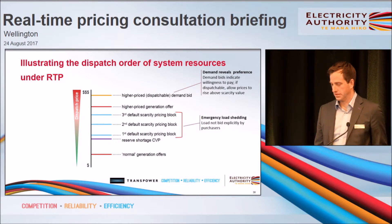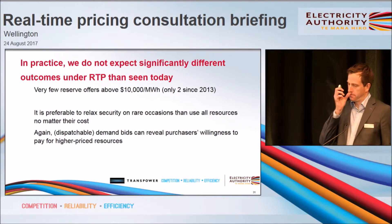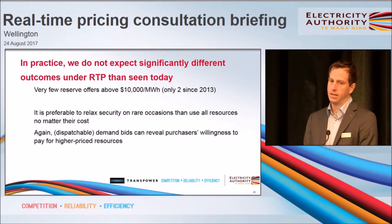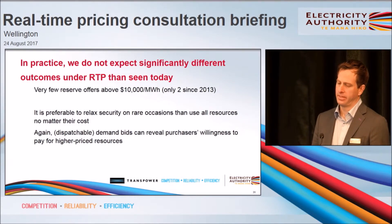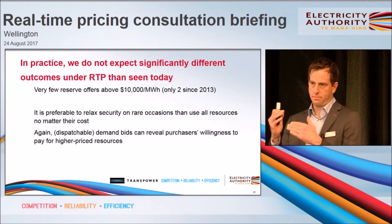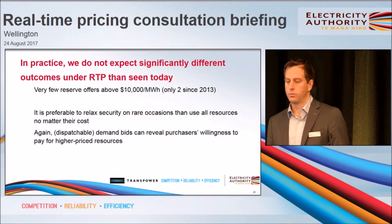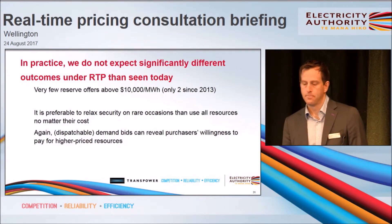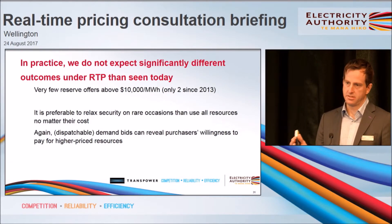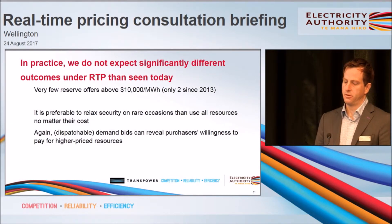Demand reveals its preference through bidding. In a way, Murray's already said this — we really do not expect any significant difference in the outcomes under RTP than we already see today. Very few reserve offers occur above $10,000 or something just below that, and the ones we have seen don't really appear to have been intentional. Overall, this is the same principle that applies today: it's preferable to relax security on rare occasions, accepting that as a temporary reduction in security, than to just use all resources no matter their cost.